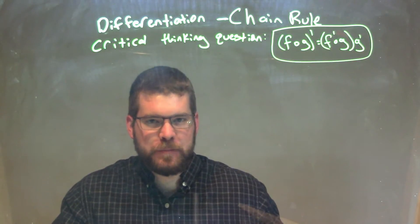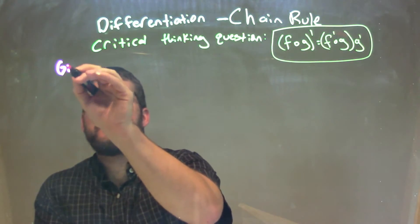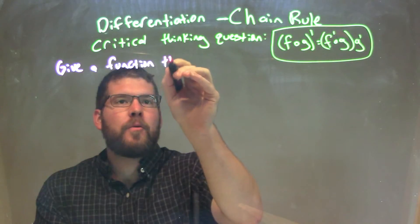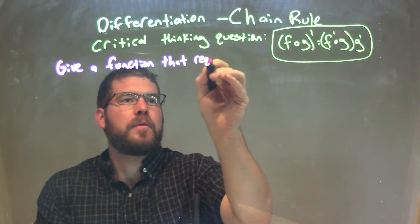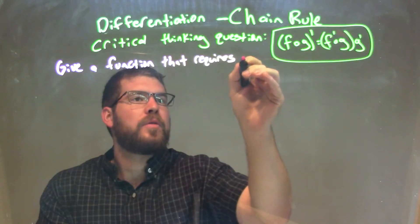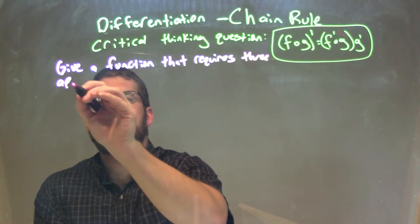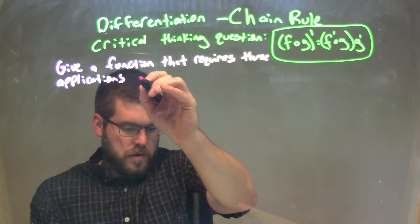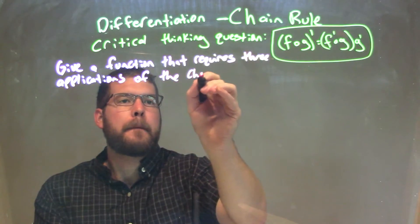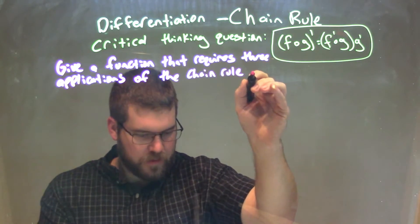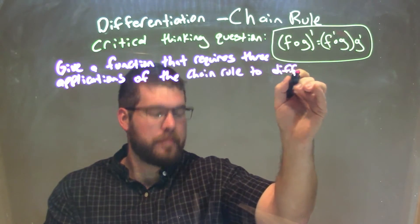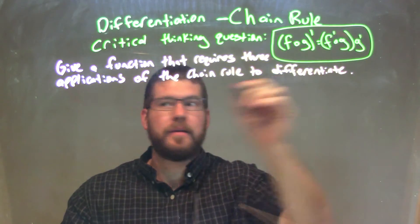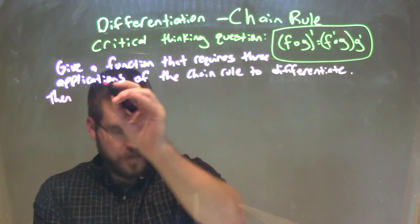This one's our critical thinking question. They ask us here: we want to give a function that requires three applications of the chain rule to differentiate. Then, differentiate the function.